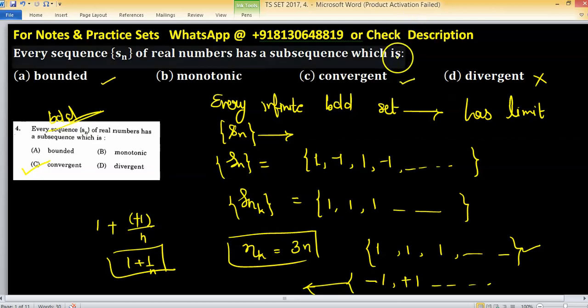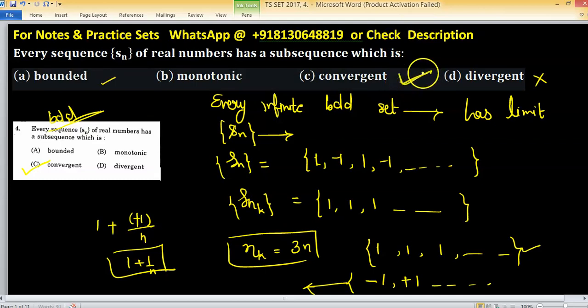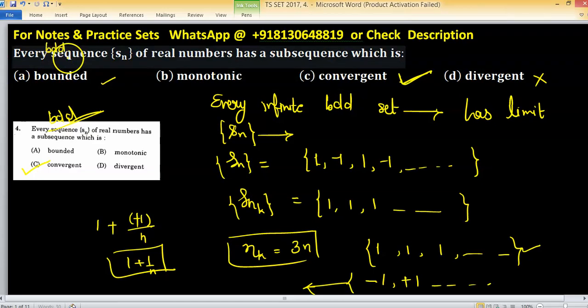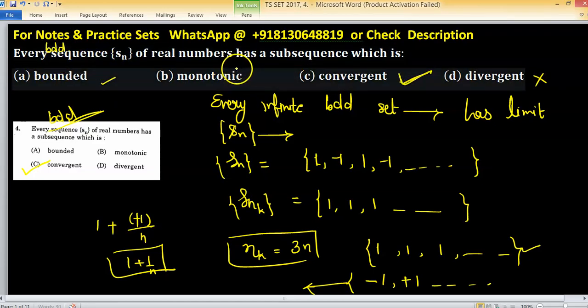Using this criteria, option C will be correct if every bounded sequence of real numbers has a subsequence which is convergent.